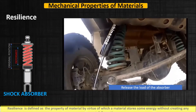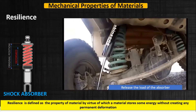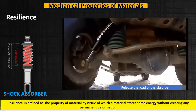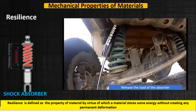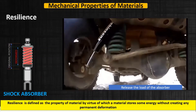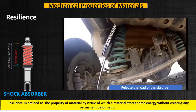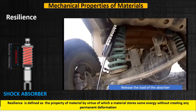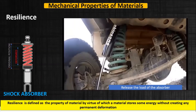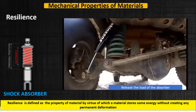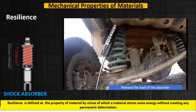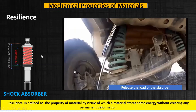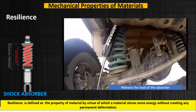So what is resilience? Resilience is defined as the property of material by virtue of which the material stores some energy without creating any permanent deformation. In this spring, there is no permanent deformation, and that is why it is an example of resilience.